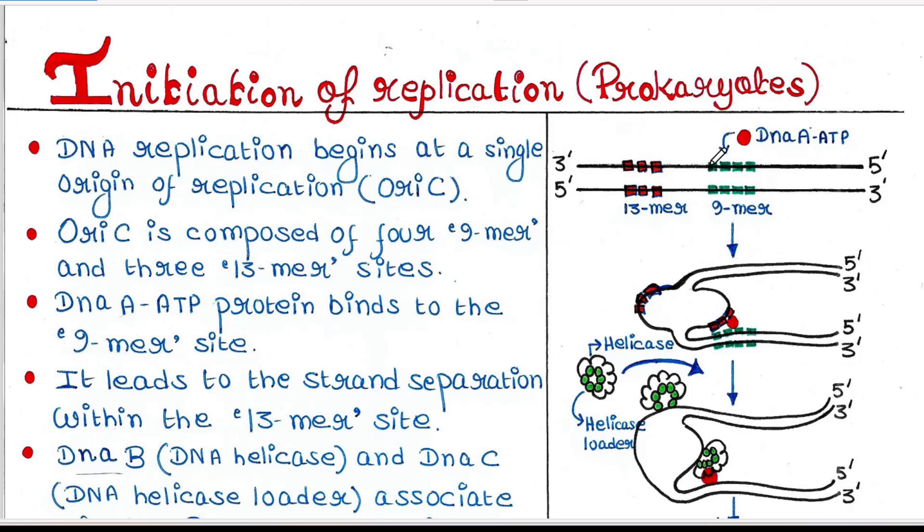One 9-mer site contains a nine base pair sequence. In this way, four such 9-mer sites are present. One 13-mer site contains a thirteen base pair sequence. In this way, three such 13-mer sites are present.